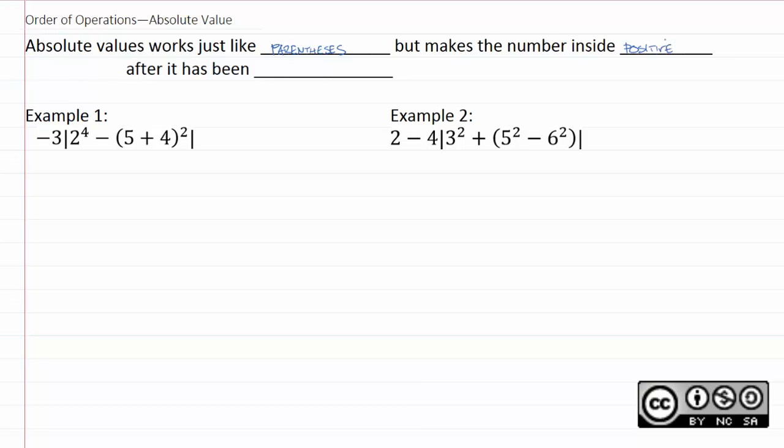Now, there is a very important thing you have to watch out for here. You can't do this positive thing until what is inside has been simplified. This positive thing is the very last thing that happens. If there's a subtraction operation inside, you have to do that first. If there's an addition operation inside, you have to do that first.